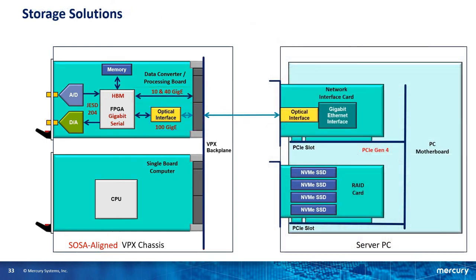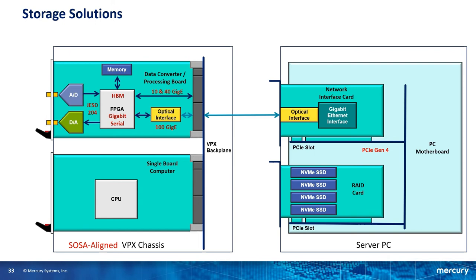Going back to our block diagram, the last stage of our system is data storage. We can stream out of our VPX chassis using 100 GigE optical, giving us a transfer rate of 12.5 gigabytes per second. If we're direct sampling RF, we probably want to record as much of that data at the highest rate possible, so we need storage that can keep up with that 100 GigE rate. I'm showing a server PC, but this could easily be a PC in a rugged enclosure. What we need to do is stream the data from the network interface card receiving the 100 GigE to the RAID card where it's stored on solid state drives.